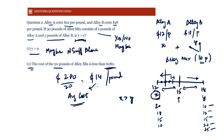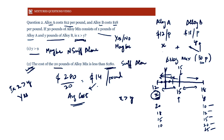If the weighted average is closer to 12, then more weight is allocated to 12 — meaning x is greater than y. When x equals y, the average is at 15; when the average is below 15 toward 12, x must be greater. So we can answer the question with a definite yes: x is greater than y. Statement 2 alone is sufficient, making the answer B.